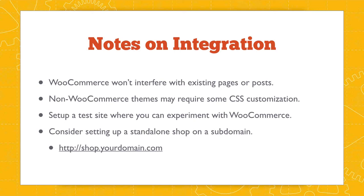Generally, if you have an existing website and want to integrate WooCommerce, you should set up a test site where you can experiment. You can set up Desktop Server on your desktop, or set up a subdomain like test.yourdomain.com on your hosting account. Then use a plugin like Duplicator to make an identical copy of your website to the test site, install WooCommerce there, and see what issues arise. You should also consider setting up a standalone shop on a subdomain like shop.yourdomain.com if integration proves problematic.